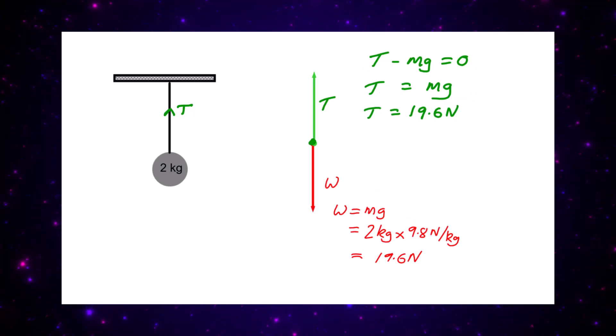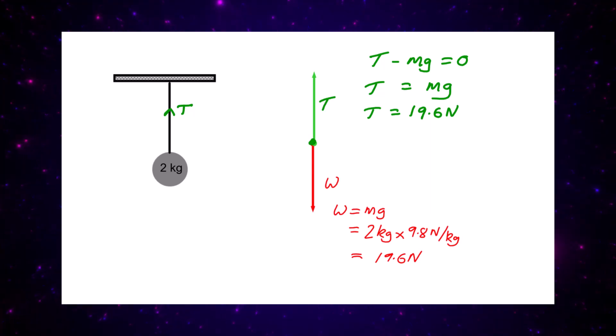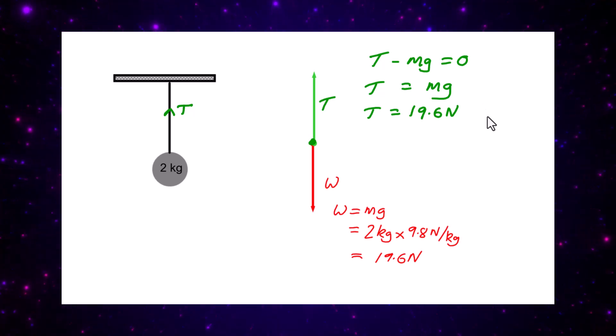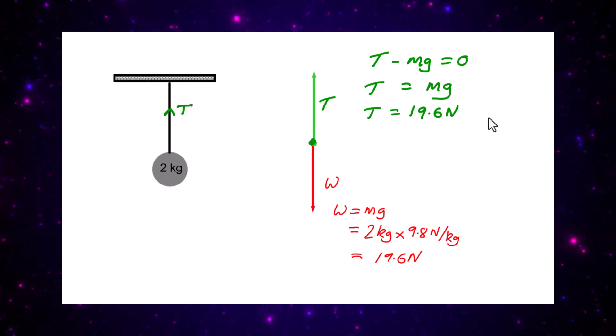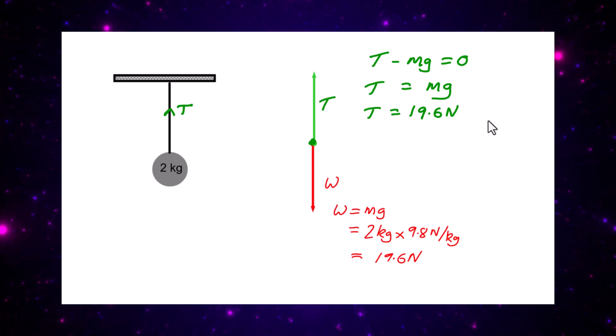We can do it a little bit more formally by writing out: the tension upward force take away the weight, the downward force must be equal to zero. The forces are balanced, and therefore rearranging we get T is going to equal mg, and we're also going to get T from that 19.6 newtons.